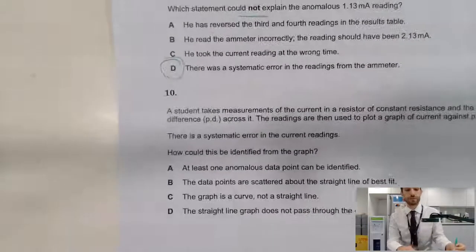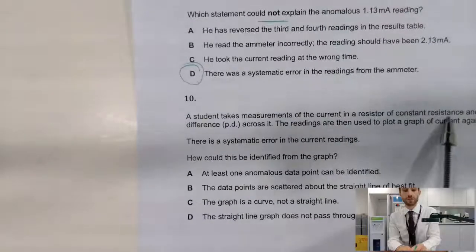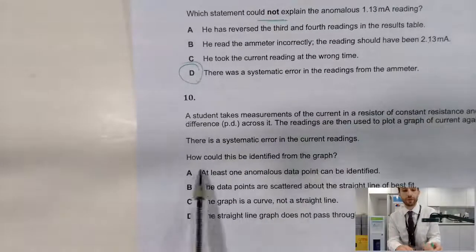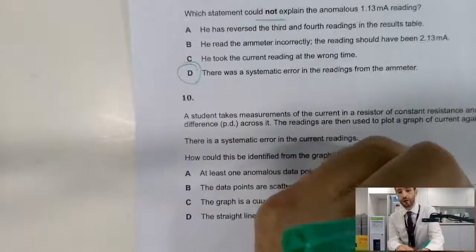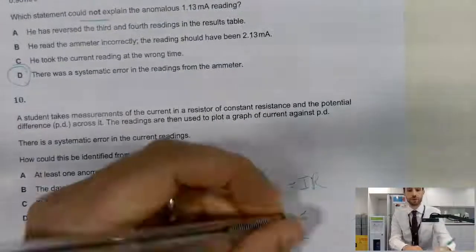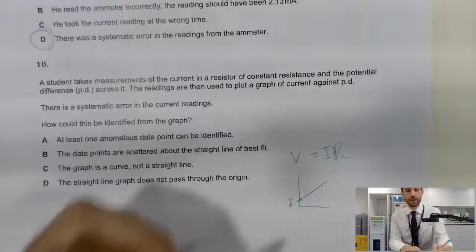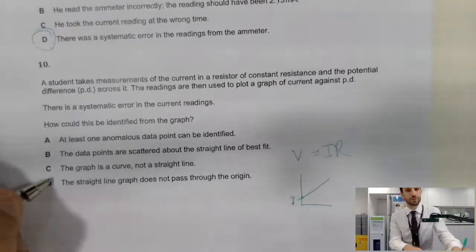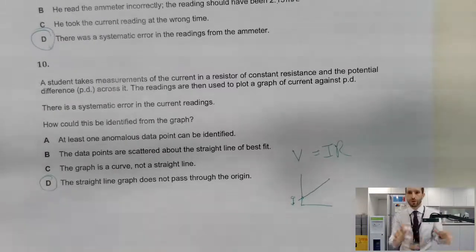Last one. Student takes measurement of the current of a resistor of constant resistance. The readings are then used to plot a graph. The systematic error in the current readings, and how could this be identified? Remember, V equal to IR. We are expecting a graph, which is a straight line. However, if there's a systematic error, we're expecting a non-zero intercept, which means that the straight line does not pass directly through the origin.